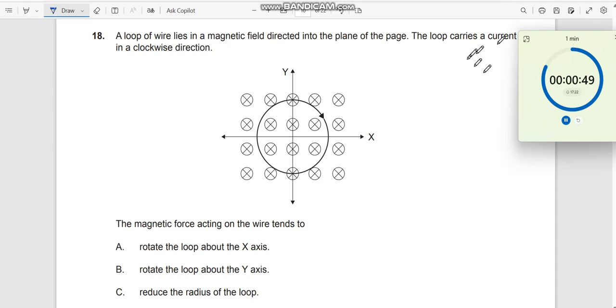The loop carries a current in the clockwise direction. So, this is my current here and this is my magnetic field.